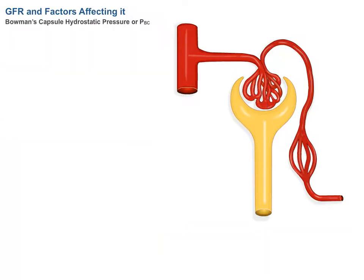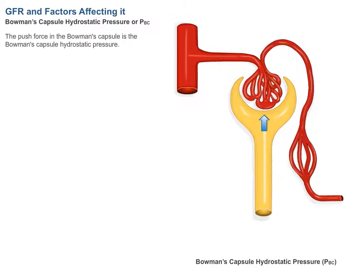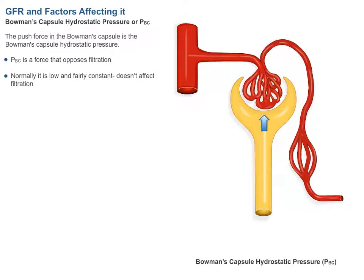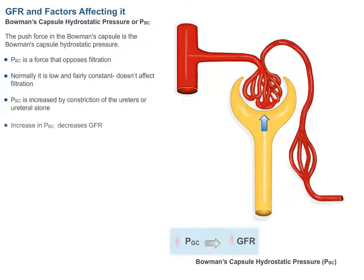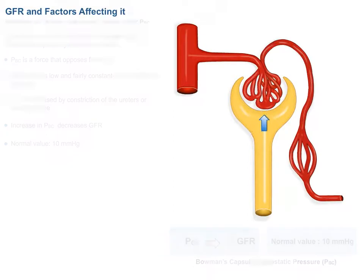Bowman's capsule hydrostatic pressure, or PBC, is the push force in the Bowman's capsule and is a force that opposes filtration. Normally it is low and fairly constant and does not significantly affect filtration. PBC is increased by constriction of the ureters or a ureteral stone. An increase in PBC decreases GFR. Normal value is 10 mmHg.